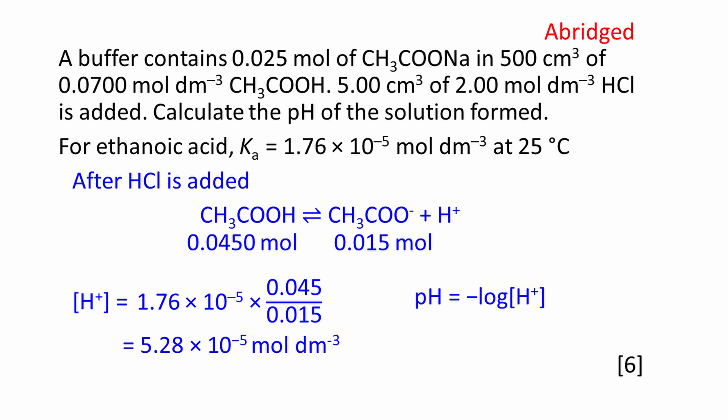Finally, work out the pH using pH is equal to minus log to the base 10 of hydrogen ion concentration. The pH works out to be 4.28. It is common to quote pH values to two decimal places, so I would recommend doing this unless the question tells you to do otherwise.